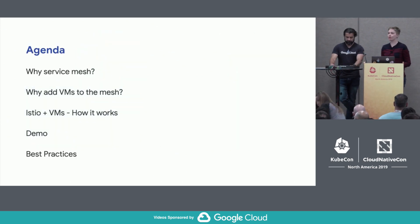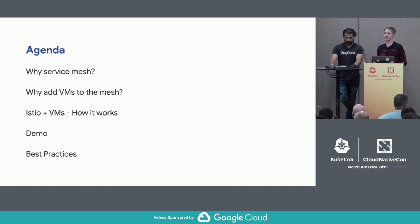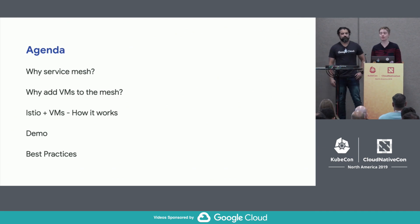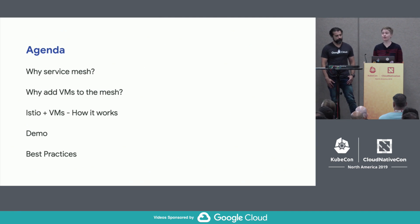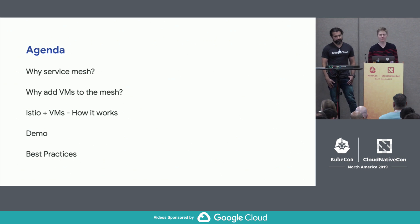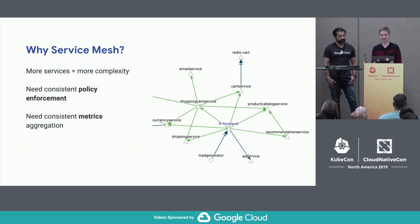Just a quick recap of what we're going to cover today. This talk does not assume any prior knowledge of Istio or Envoy. We're going to give a quick introduction to Istio and why you would use a service mesh. Then we'll talk about VMs and why you'd want to add a VM to a service mesh. Then Amir will give a rundown of how this works, we'll run through some demos, and close out with best practices.